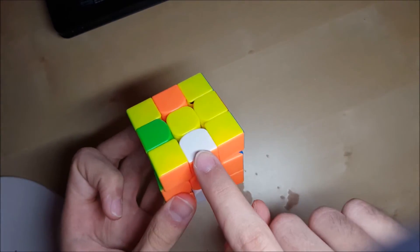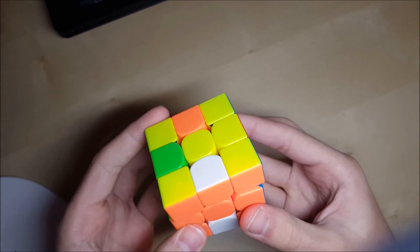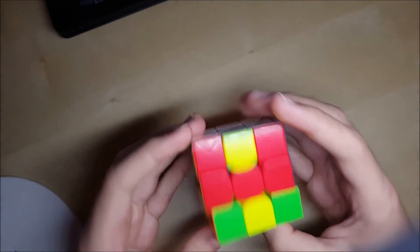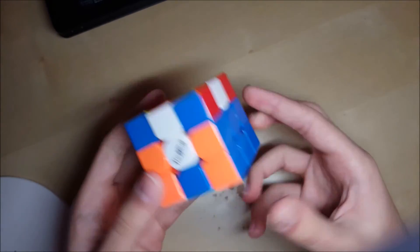So here, you switch this with this, and then that gives us the one move arrow, so M' U2 M. And then we line those up in the back, and M'.